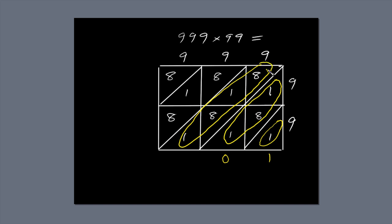Again, 1 plus 8 plus 1 is 10, plus 8 is 18, plus 1 is 19. Write the 9 below the diagonal and carry the 1 across to the next diagonal.